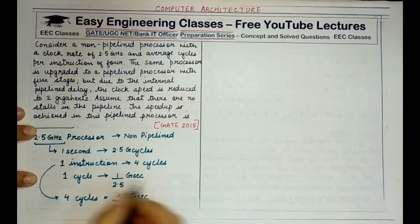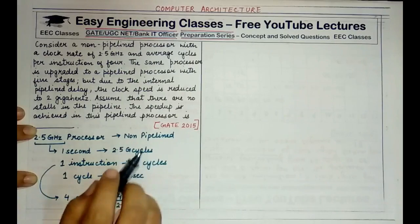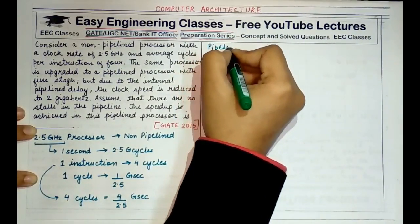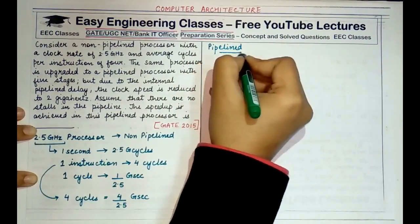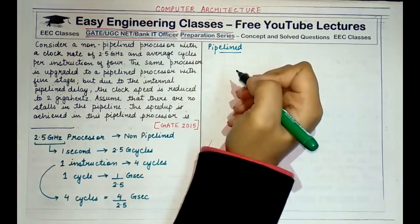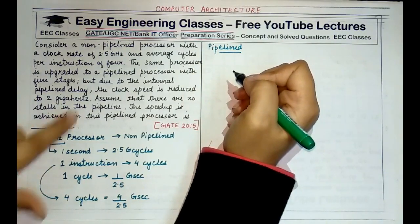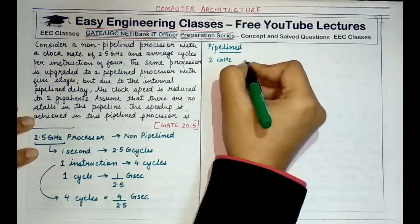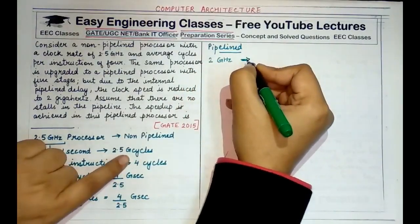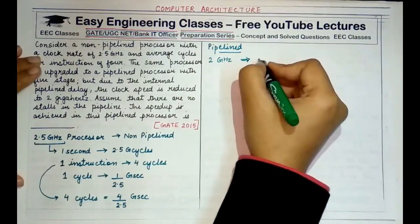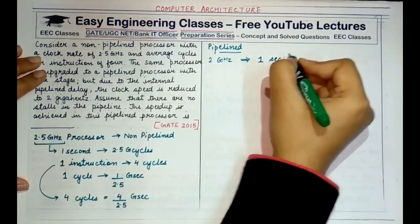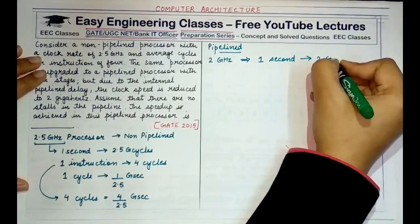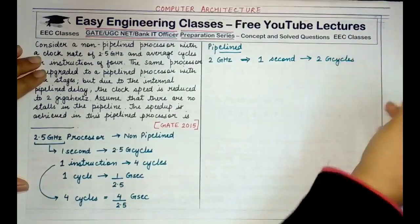This was the scenario for the non-pipelined processor. When this processor is converted into a pipelined processor, the specification is 2 GHz, which means in one second, 2 GHz cycles are now completed.